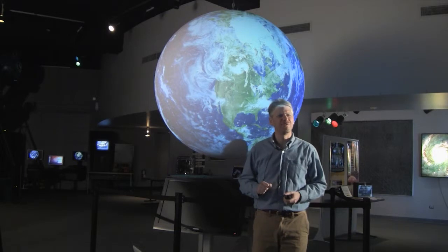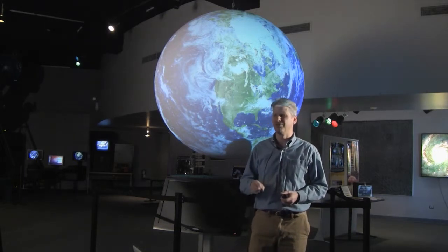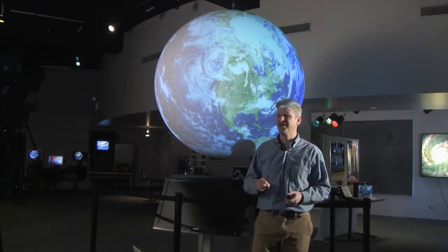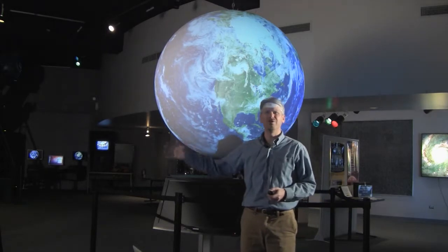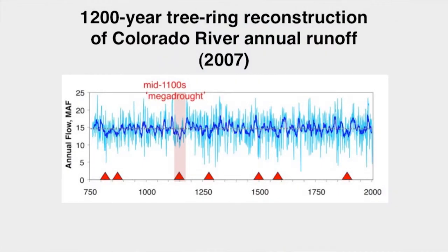The current state-of-the-art for tree ring reconstructions of the Colorado River stream flow at Lee's Ferry now extends back over 1,200 years. It shows multiple droughts more severe and sustained than any seen in the past 100 years of gauge stream flow, including a few with greater potential impacts than the 1500s drought or the 2000s drought.